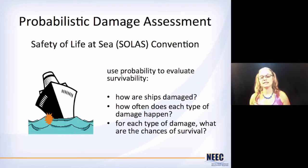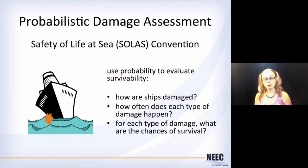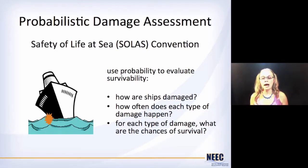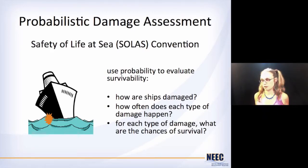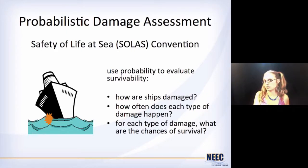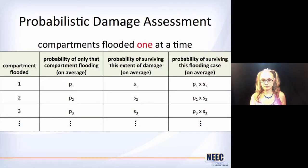The Safety of Life at Sea Convention first met after the Titanic sank, because the Titanic did not have enough lifeboats for all of its passengers. It's met every once in a while since then whenever something new comes about and we need to make a big change in the rules for classifying vessels and ships. Their recommendation after the Andrea Doria was that we needed to use probability to evaluate the survivability of our ships — to figure out how ships are damaged, how often that damage occurs, and then given that kind of damage, what are the chances that you're going to survive it. We've got to roll all that together into one thing.